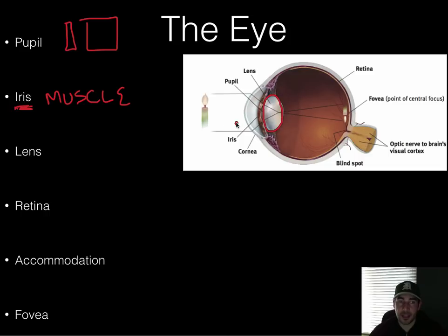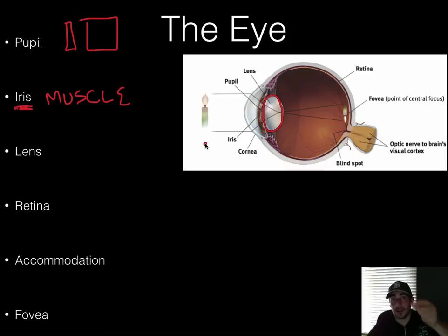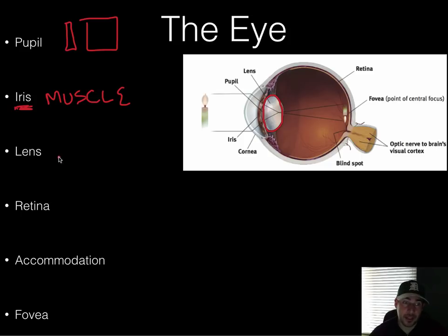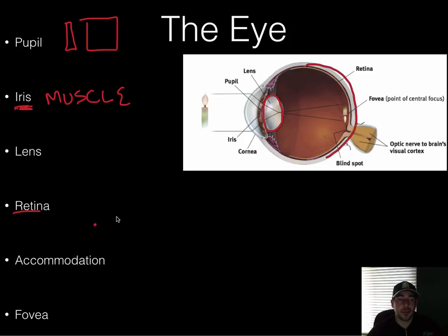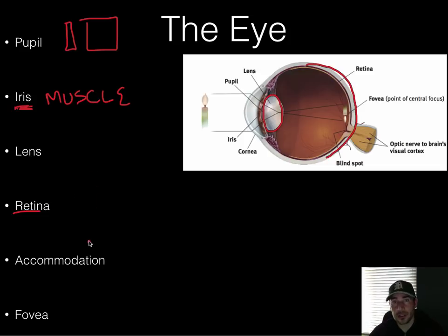After going through the iris and pupil, the lens helps focus the light so that as it's sent to the back of the eye, your brain can make sense of it. It focuses those wavelengths and then the light goes back to what's called the retina, at the very back of your eye. This is where you have rods and cones.